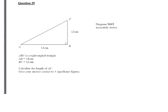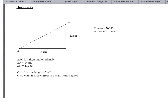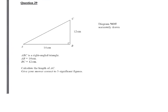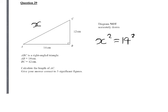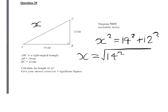So a straightforward Pythagoras rule question — we're trying to find AC, so we're going to call AC x. So x squared will equal 14 squared plus 12 squared, so x will equal the square root of 14 squared plus 12 squared.